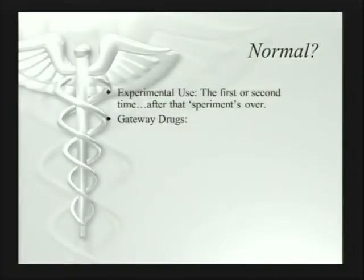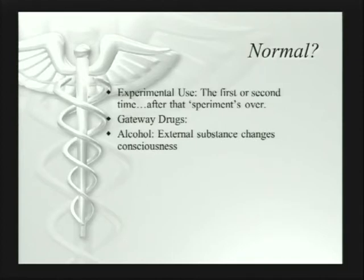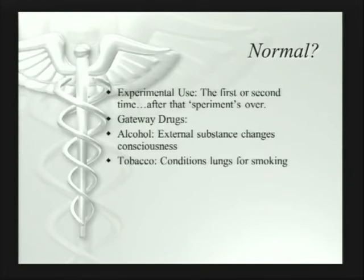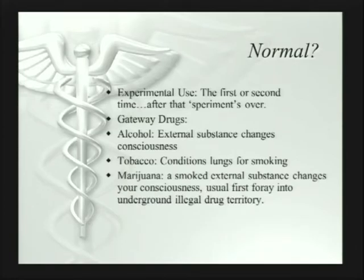Gateway drugs — the idea is you encounter alcohol and tobacco as usually your first gateway drugs. Alcohol, as an external substance, basically conditions you to the idea that an external substance changes your consciousness. Tobacco conditions the lungs for smoking. So many times, most people's first drug experiences are with alcohol and tobacco. Then marijuana — a smoked external substance that changes your consciousness — is usually the first foray into the underground illegal drug territory.